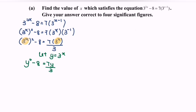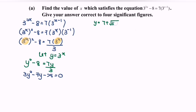Multiplying all terms by 3, we get 3y squared minus 7y minus 24 equals 0. So now we have a quadratic equation. Using the calculator to factorize, we get y equal to 7 plus square root of 337, all over 6.